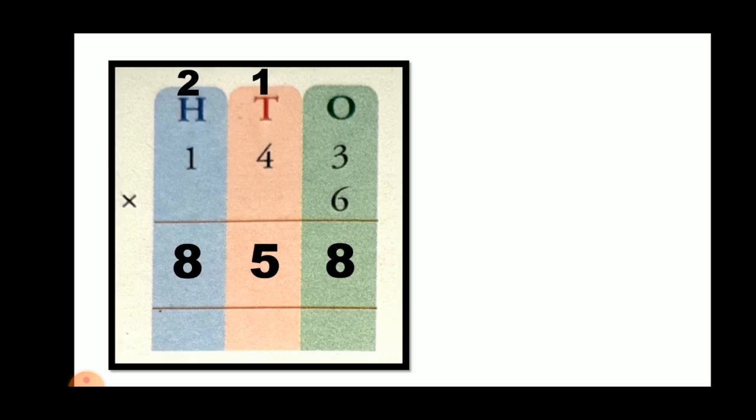Now multiply 6 into 4, which will give you 24, and plus 1 will give you 25. So write 5 in the tens place and 2 will be carried over to the next place.